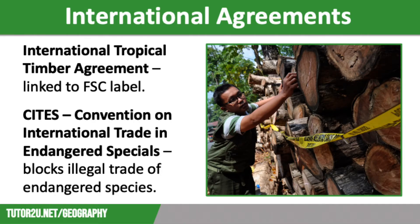Illegal felling tends to take place in the most remote parts of the rainforest. The 2006 agreement means that all hardwood timber has to be marked with a registration number which shows where it was felled, so buyers can see that it was sustainably sourced.